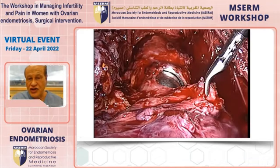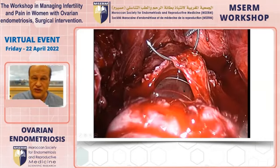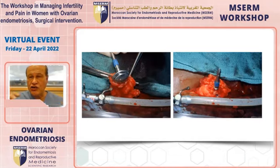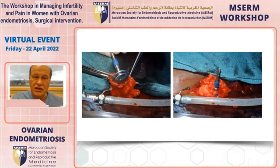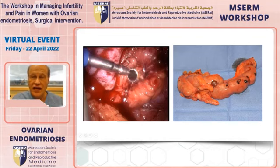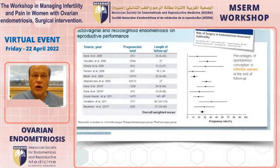A disc resection removes a small nodule which is then sutured. Both ureters are visible. However, if there are multiple large nodules circumferentially, a laparoscopic bowel resection is performed — as shown here where multiple nodules including the cecum and appendix are removed.